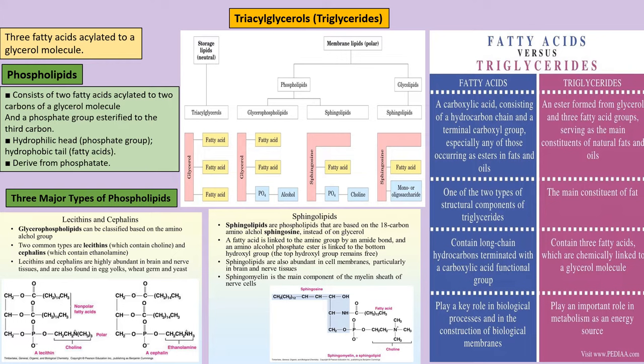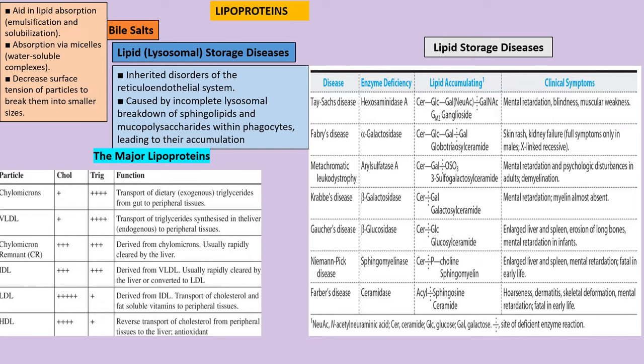Regarding lipid storage diseases: in Tay-Sachs, hexosaminidase A is missing. In Niemann-Pick disease, sphingomyelinase is missing, so sphingomyelin accumulates. In Gaucher disease, glucocerebrosidase is missing, so glucocerebrosides accumulate. In Krabbe disease, galactocerebrosidase is missing. All of these diseases are autosomal recessive except Fabry disease, which is X-linked recessive.